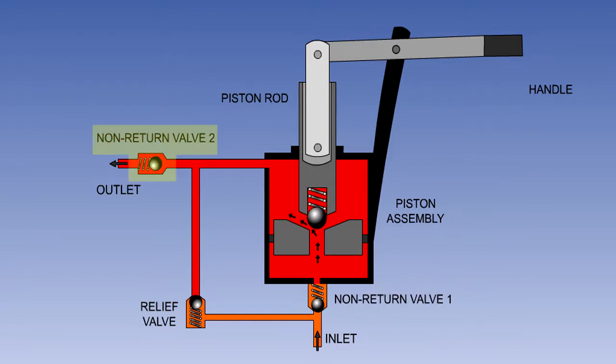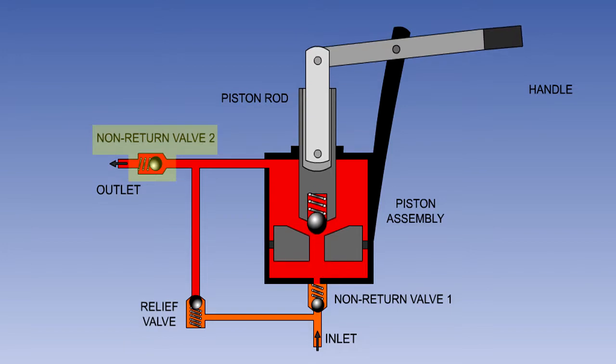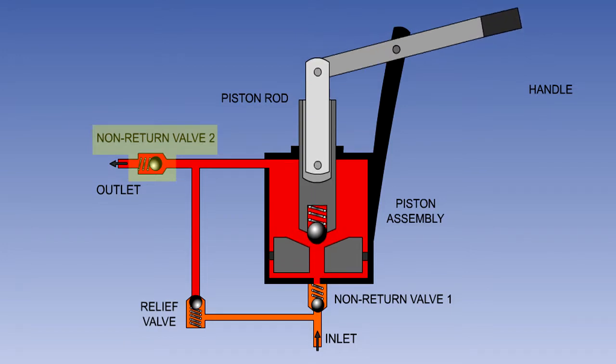As the piston moves down, the volume of fluid displaced from below the piston is greater than the volume available in the cylinder above because of the presence of the piston rod. This excess fluid will open NRV2 and flow through the outlet. The relief valve will remain closed as it is set at a higher pressure than NRV2.